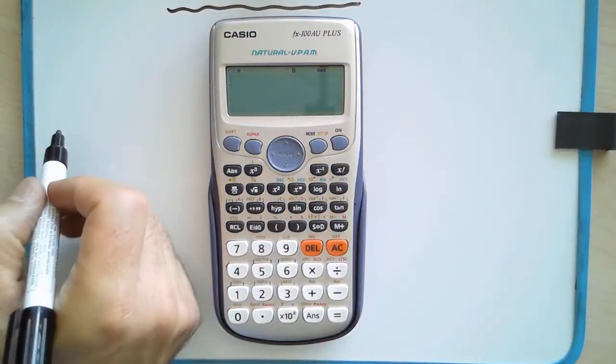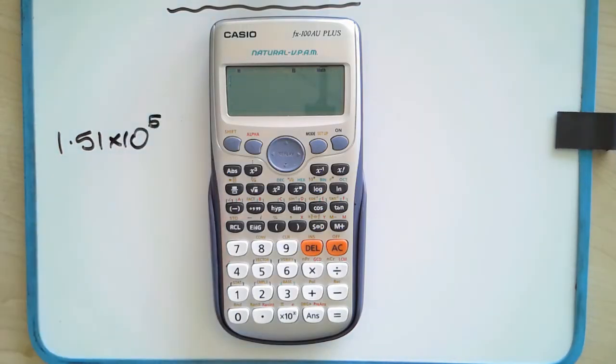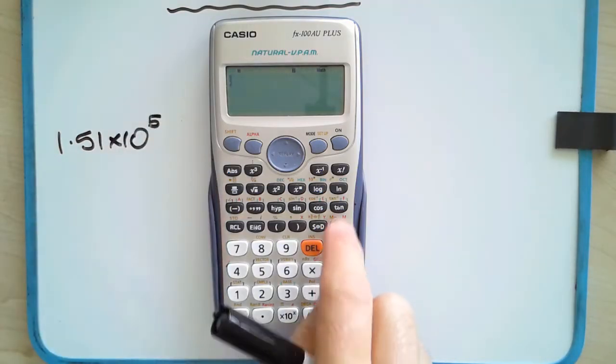So if you wanted to enter in, for example, 1.51 times 10 to the power of 5, how would you enter that in?